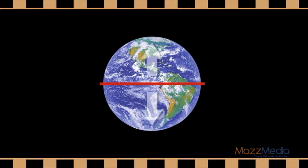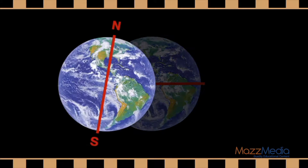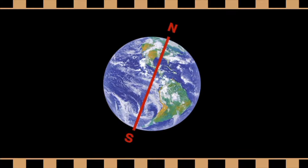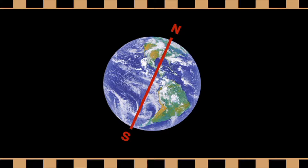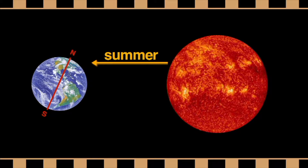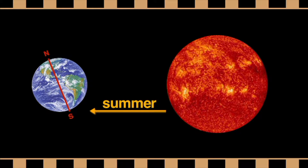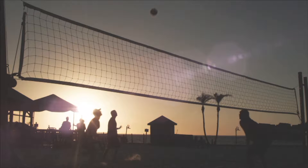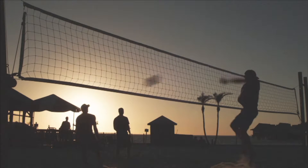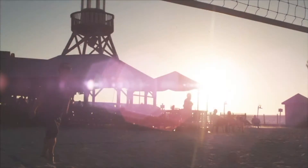The Earth is tilted about 23.5 degrees, and it is this tilt that causes the seasons. When the North Pole is tilted toward the sun, it's summer in the Northern Hemisphere of the Earth — it takes in more sunlight. With more light, the days are longer and the weather is warmer. It's summer.